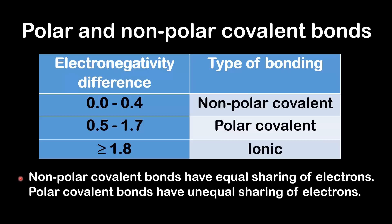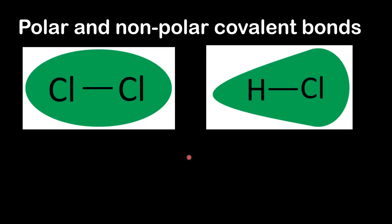Nonpolar covalent bonds have equal sharing of electrons, while polar covalent bonds have unequal sharing of electrons. Here we have an example of a polar and nonpolar covalent bond. The green area shows the electron distribution around the two atoms.